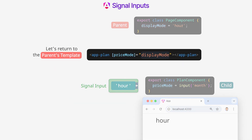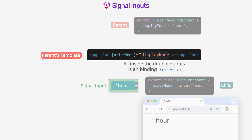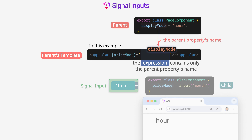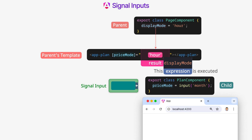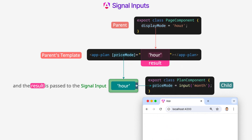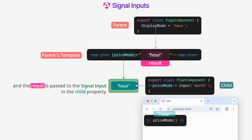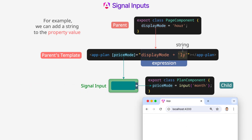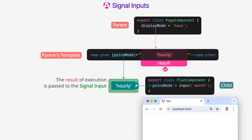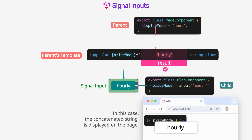In the parent's template, all inside the double quotes is an expression — a template expression. In this example, the expression contains only the parent property's name, but it could be more complex. This expression is executed, and the result is passed to the signal input in the child property. For example, we can add a string to the property value. The result of execution is passed to the signal input in the child property, so the concatenated string is displayed on the page.